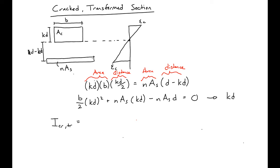Our cracked transformed moment of inertia will be, in our case using parallel axis theorem, B times KD cubed over 12 plus B times KD times KD over 2 squared plus N A_s times KD minus D squared. This will give us our I_cracked transformed moment of inertia.